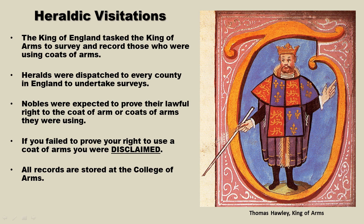Once a knight or noble arrived, they were expected to prove their lawful right to the coat of arms they were using — proving their lineage and that they had rights to use that particular emblem. If you failed to prove your right, you were disclaimed. This meant that any shields or other items containing your coat of arms were removed from your castle and confiscated by the heralds. The names of the disclaimed were entered into a book for that particular county and stored at the College of Arms in London. Apparently, there were some instances where disclaimed nobles simply put their coats of arms back up in their castle after the heralds left.